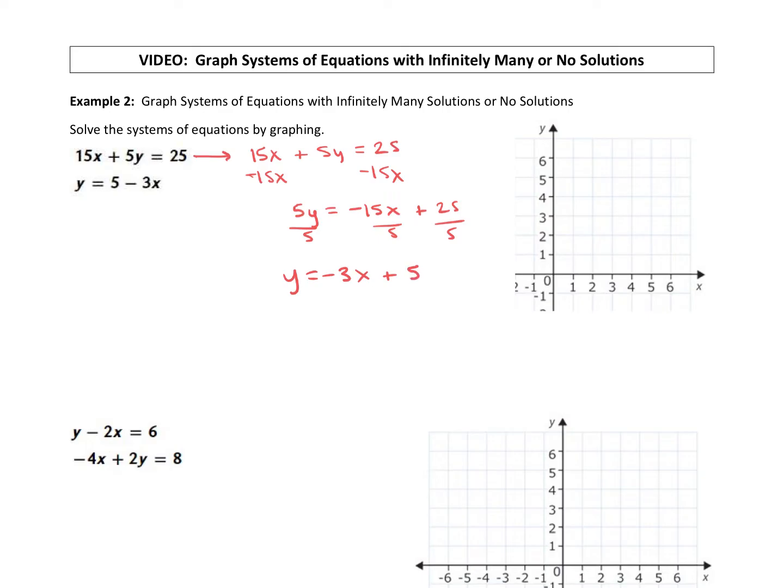We can graph that. The y-intercept is 5, so we can go up 5 on the y-axis. The slope is negative 3, so down 3 to the right 1, down 3 to the right 1. We can draw in our line as carefully as we can. There's our first line.